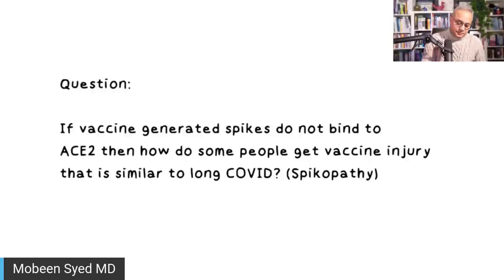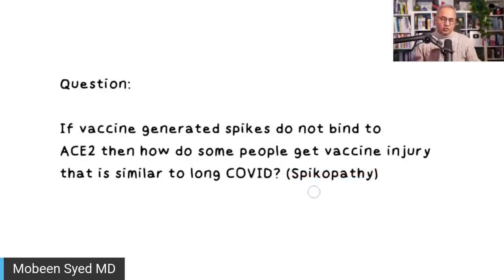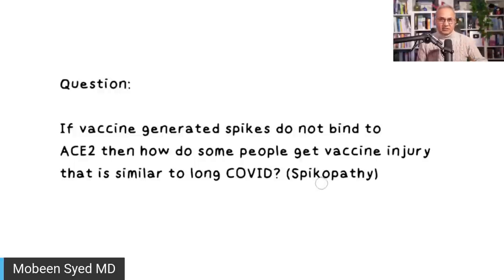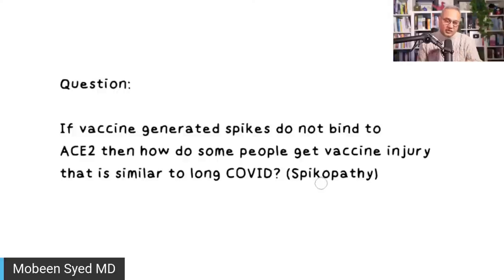The question is: if vaccine-generated spike does not bind to ACE2, then how do some people get vaccine injury similar to long COVID or the same spikopathy? There are many questions within this. For example, vaccine spike-generated injury can occur from both SARS-CoV-2 and spike from the vaccine. It is possible that one receptor binding domain is in the up position. There is also another locking mechanism called HEXA-PRO, claimed to be better than S2P because S2P seems to be more unstable.